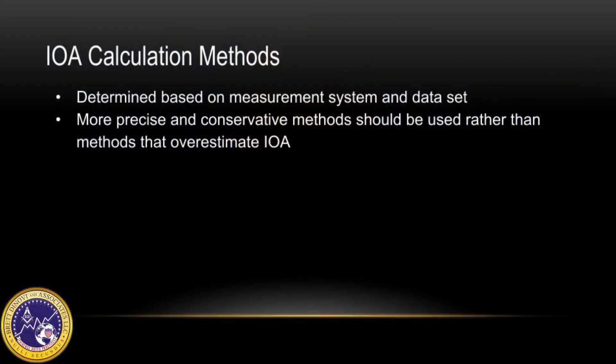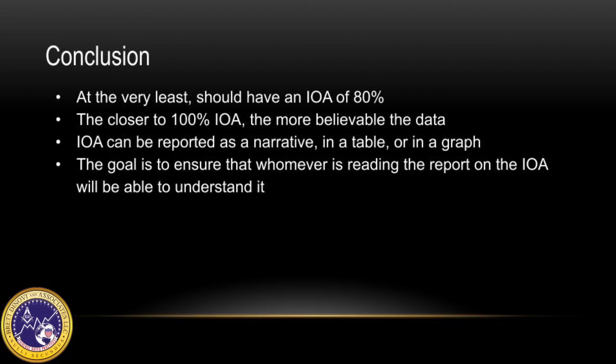The frequency that IOA will be assessed is determined based on prior IOA results, the complexity of the measurement system, the experience and number of observers, and the number of phases and conditions. IOA calculation methods should be determined based on the measurement system and the data set. More precise and conservative methods should be used rather than methods that overestimate IOA. At the very least, observers should have an IOA of 80%, though there is no strict scientific reasoning behind it — researchers and clinicians have typically used this as a rule of thumb. The closer to 100% IOA, the more believable the data.